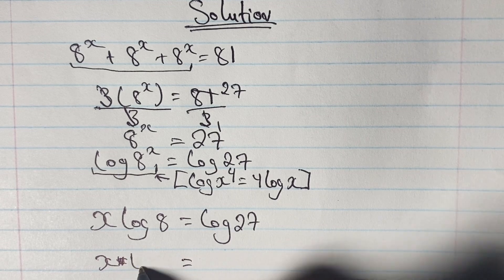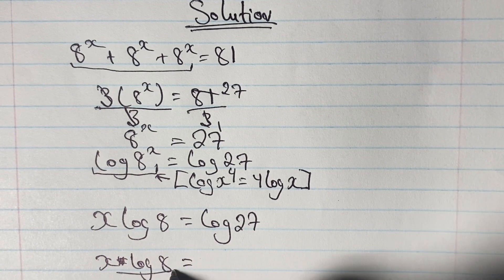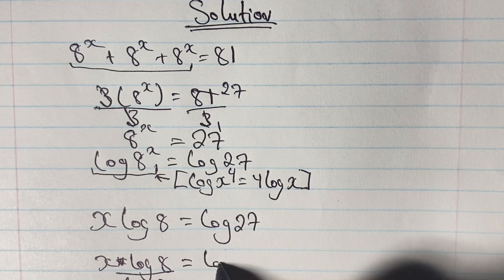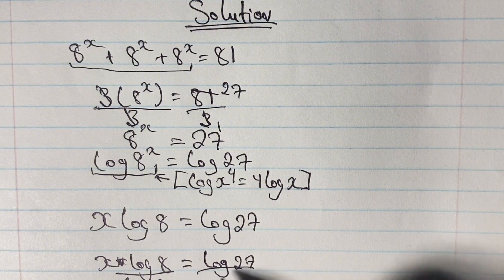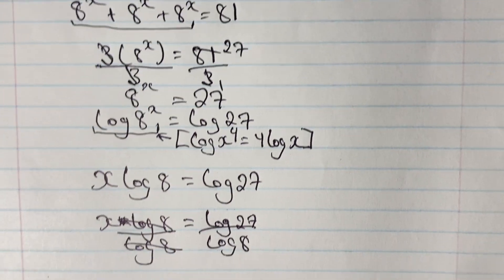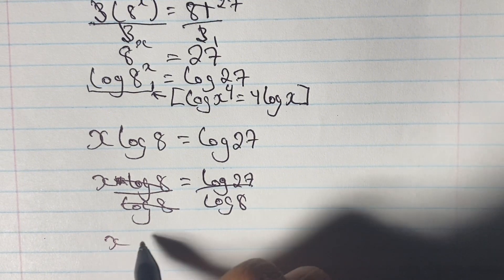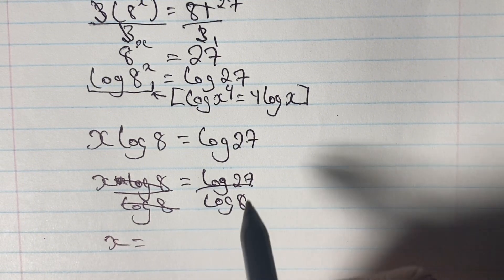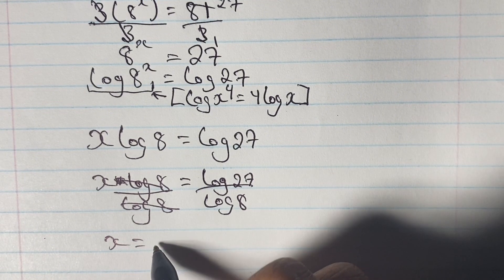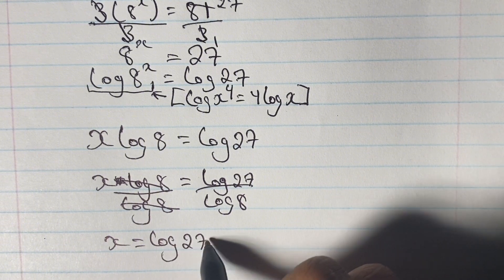To isolate x, we divide both sides by log 8: x log 8 over log 8 is equal to log 27 over log 8. Log 8 cancels on the left, so we now have x is equal to log 27 over log 8.